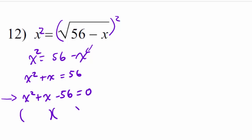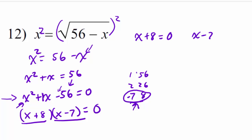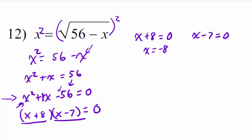It factors into two binomials equal to zero. The only way to get x squared is x times x. For 56 we look at factor pairs: 1×56, 2×28, 7×8. We need factors whose sum is positive 1 but whose product is negative 56. Seven and 8 have a difference of 1, so making 7 negative gives (x + 8)(x − 7) = 0. Setting each factor equal to zero: x plus 8 equals 0 gives x equals negative 8, and x minus 7 equals 0 gives x equals positive 7. The two potential answers are negative 8 and 7.